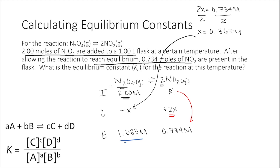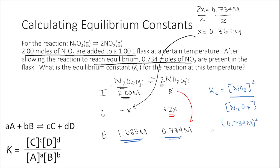Now I can use these equilibrium concentrations in the equilibrium constant expression. Kc equals the concentration of NO2 squared divided by the concentration of N2O4 — products raised to their respective coefficients over reactants. So Kc equals (0.734)² divided by (1.633). We report equilibrium constants without units, and this gives us an equilibrium constant of about 0.33.